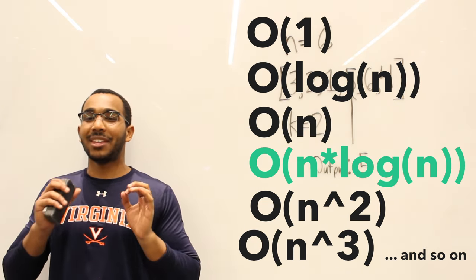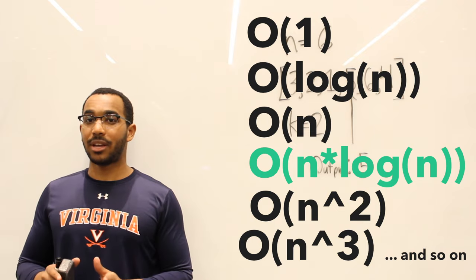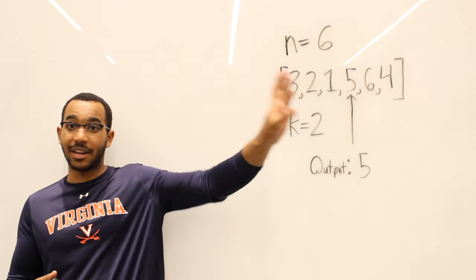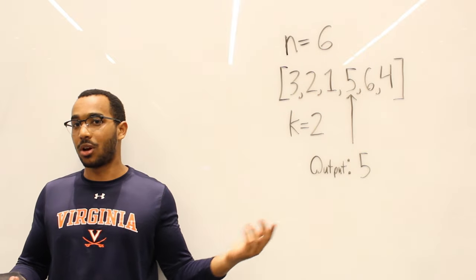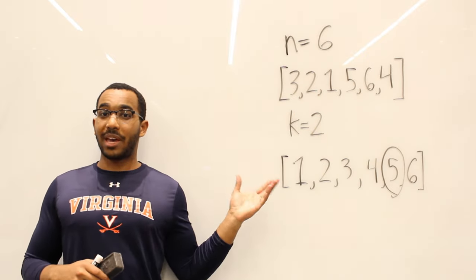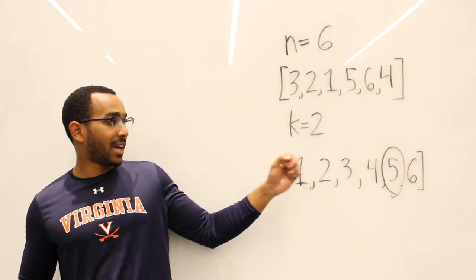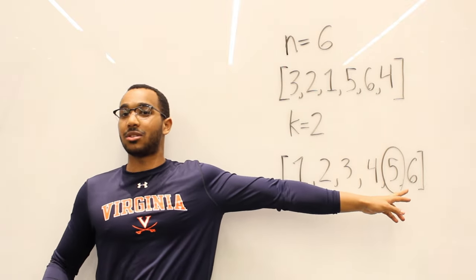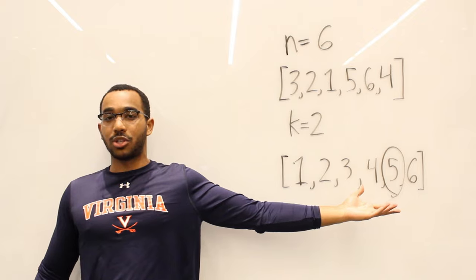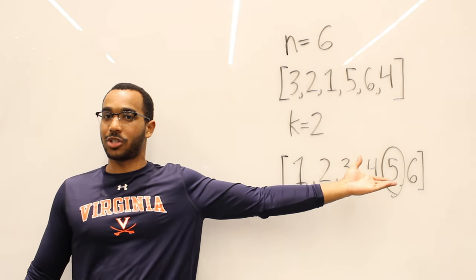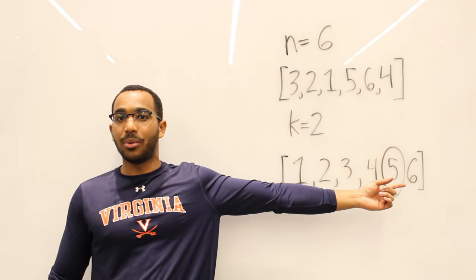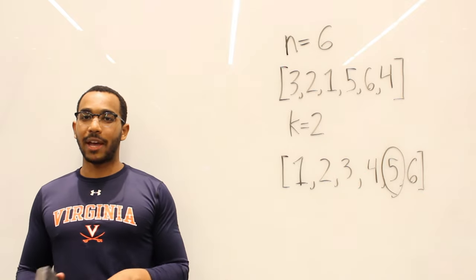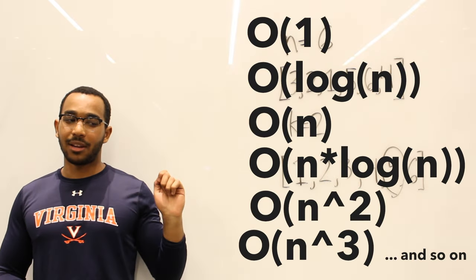So immediately, if I want the kth largest item, I sort it and do a backwards iteration from the end of the array. We have the sorted array, k is 2. We start at the end — if it were 1, we'd pick that item, the largest. If it's 2, we move back and come to the 5. So we hit n log n.